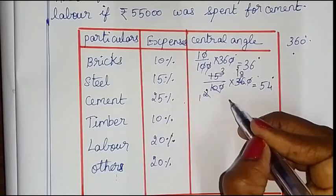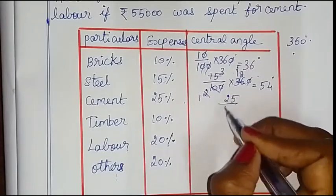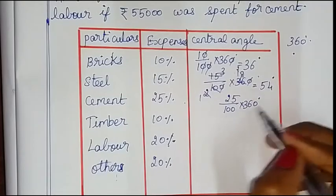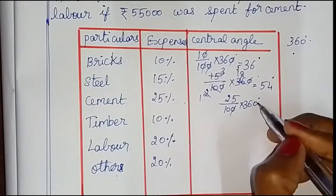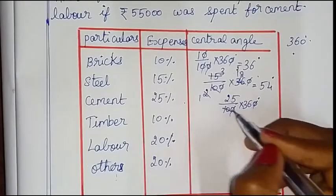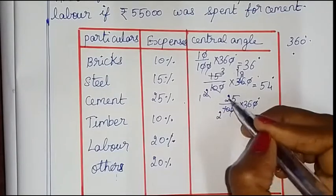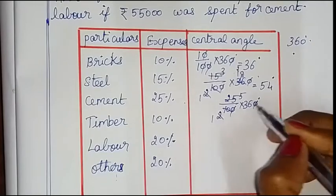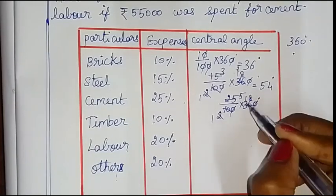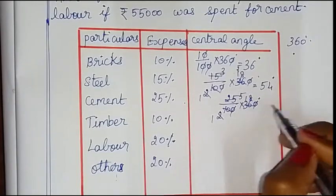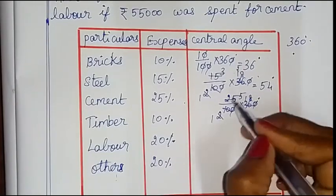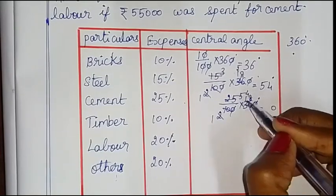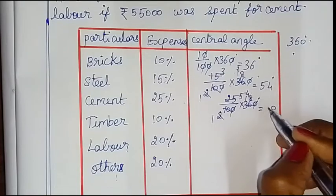Add cement to 25 percentage — so this is the central angle: 25 by 100 into 360 degrees. We multiply the numerator and denominator. 5 twos are 10, 5 fives are 25. 5 eights are 40, 4 fives are 5 — so 90 degrees. Cement central angle is 90 degrees.